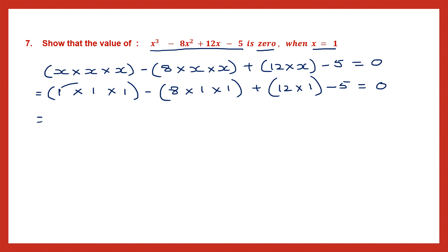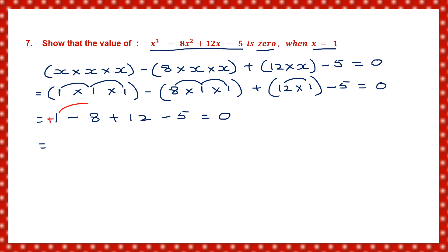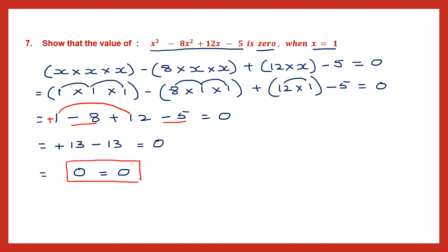So this equals 1 into 1 into 1, minus 8 into 1 into 1, plus 12 into 1, minus 5. 1 into 1 is 1, 1 ones are 1, so this is still 1. Minus 8 ones are 8, 8 ones are 8. Plus 12 ones are 12, minus 5. The numbers with plus sign are plus 1 and plus 12 — 12 plus 1 is 13. The numbers with minus sign are minus 8 and minus 5 — 8 plus 5 is 13. So plus 13 minus 13 is 0. We have proved that the expression equals 0 when x is 1.